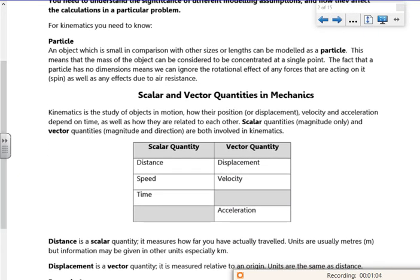So it says here that you need to understand the significance of different modeling assumptions and how they affect the calculations. Right, so let's have a look at this then. So a particle - so anything we treat as a particle really, a single point. And that's what that kind of says. Now we don't deal with spin and we ignore air resistance. So there's no rotational effects and there's no spin and there's no air resistance.